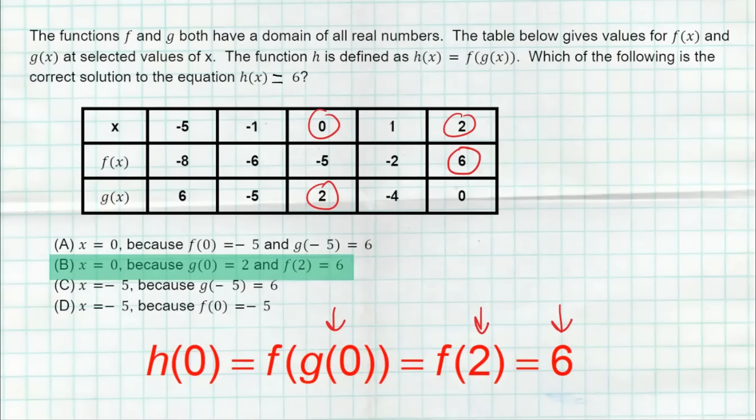C and D have negative five. And if you plug negative five in, it doesn't result in six. And A, the logic doesn't make sense because they're trying to say to plug zero into F first. And no, you plug zero into G first, following the rules of the composition function there. So hopefully that one makes a lot of sense.